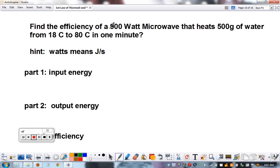Find the efficiency of a 900 watt microwave heating 500 grams of water from 18°C to 80°C in one minute. Here's your hint: watts just means joules per second.